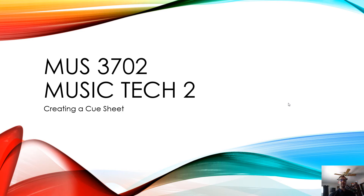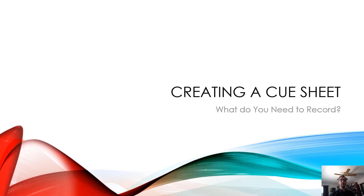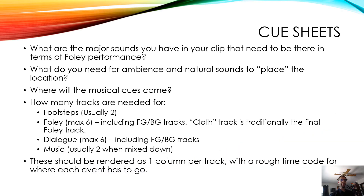The next thing to talk about in terms of working with sound for films is creating a cue sheet and spotting the film. What do you need to record for sound effects and where do they need to get placed? What are the major sounds you have in your clip that need to be there in terms of the full performance? What do you need for ambience and natural sounds to place the location? Where will the musical cues come and occur?